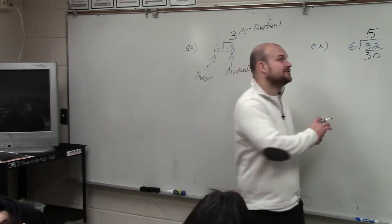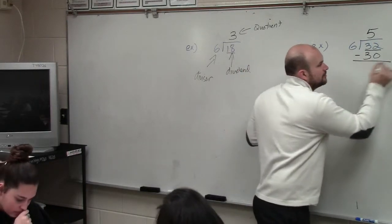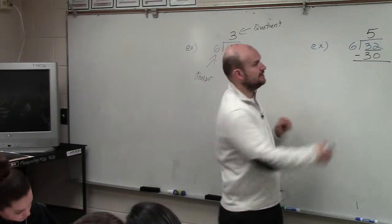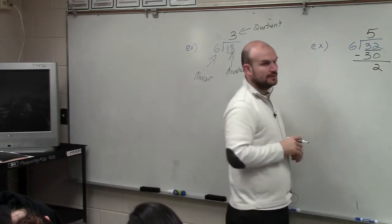Then the next step is you subtract your rows. So now I subtract vertically. 32 minus 30 is 2.